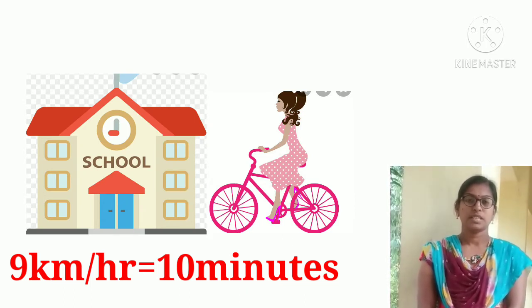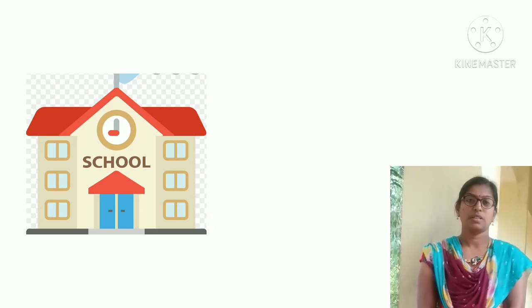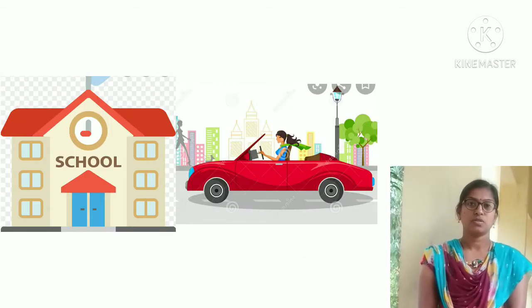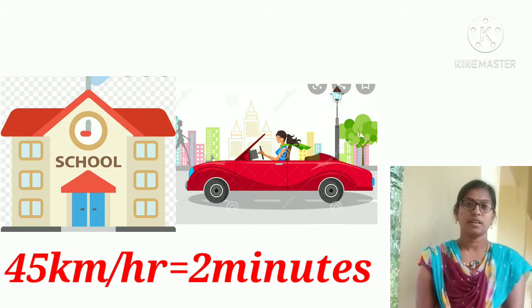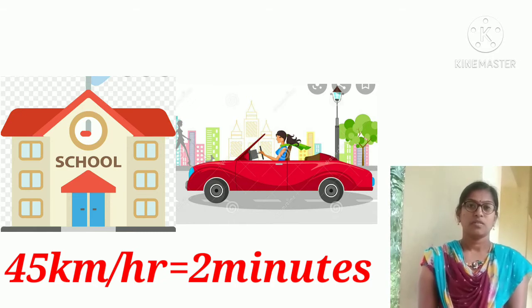If she goes by cycling at 9 km per hour, she reaches school in 10 minutes. If she goes by car at 45 km per hour, she reaches school in 2 minutes.